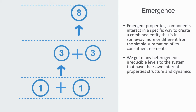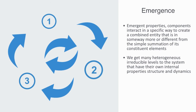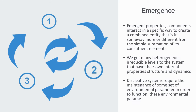Systems are regulated by a set of negative and positive feedback loops that define the system's pattern of development over time. Dissipative systems require the maintenance of some set of environmental parameters in order to function. These environmental parameters are regulated through feedback loops, and the process whereby this takes place is called homeostasis.